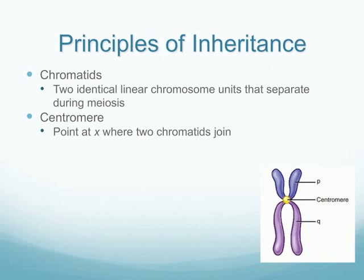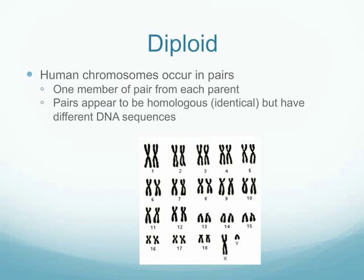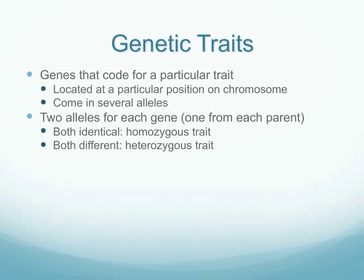Chromatids are the two chromosome units that separate during meiosis, and the centromere is the point where those two chromatids join. Human chromosomes occur in pairs, otherwise known as being diploid — one member of each pair comes from each parent. Even though the pairs look identical, they have different DNA sequences because one comes from the mother and one from the father. Genes code for a particular trait and, though located at the same position on the chromosome, may come in different alleles. If both alleles are identical we call it homozygous; if they're different, we call it heterozygous.